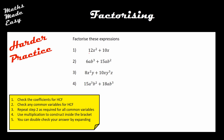Question one: coefficients are 10 and 12. Highest common factor of 10 and 12 is 2. I can see that there are x's in both terms, so I take out x. Adding my brackets: what do I times by 2x to make 12x²? It would have to be 6 and an x. What do I times by 2x to make 10x? It would have to be 5.